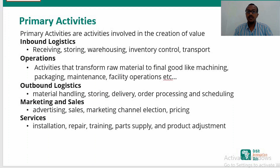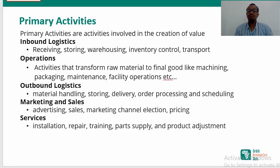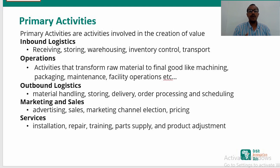The primary activities are inbound logistics, operations, outbound logistics, marketing and sales, and services. Inbound logistics involves receiving, storing, warehousing, inventory control, and transport. Operations looks at activities that transform raw materials into finished goods, including packaging, maintenance, and facility operations. Outbound logistics is concerned with distribution of finalized products — material handling, storing, delivery, order processing, and scheduling.